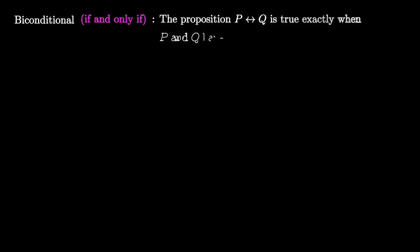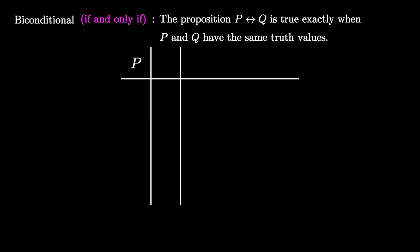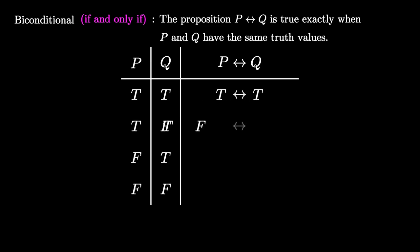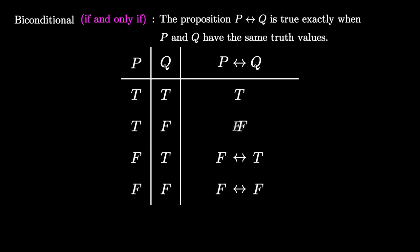We can use the conditional connective to introduce a fifth logical connective known as the biconditional. The biconditional connective is true exactly when the connected propositions p and q have the same truth values. So the truth table has true for true-true and false-false pairs, and false for true-false and false-true pairs.